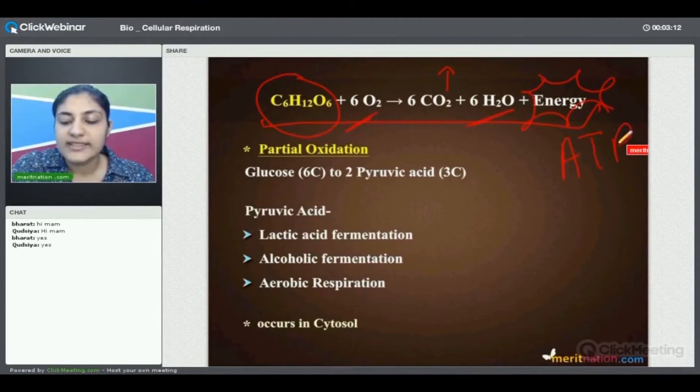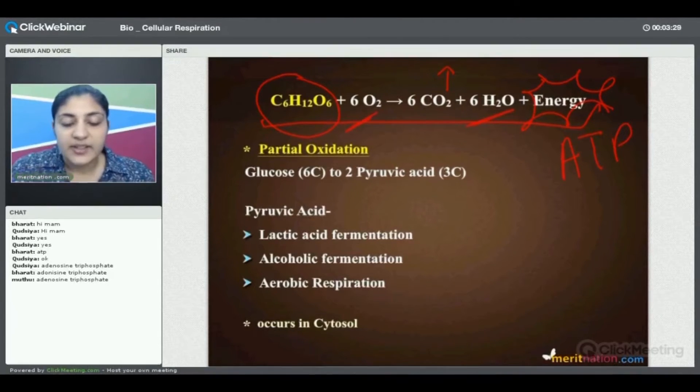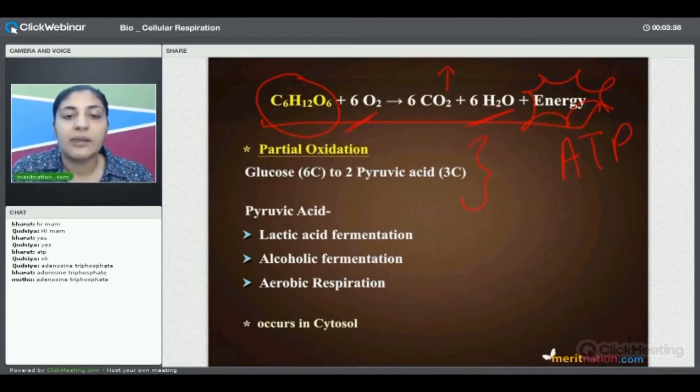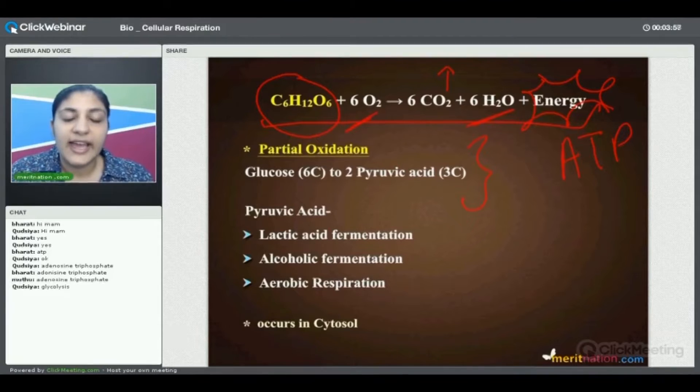As you well know, this energy is released in the form of molecules called ATP. Can I have the full form of ATP quickly? Adenosine triphosphate, very good. Coming to the steps in respiration, the first is partial oxidation, when glucose, which is a six carbon atom molecule, is converted into pyruvic acid, which is a three carbon atom molecule. What is the name of this process? Glycolysis, very good.